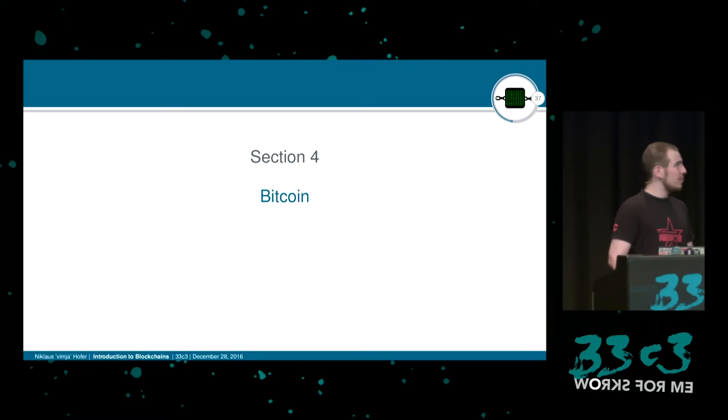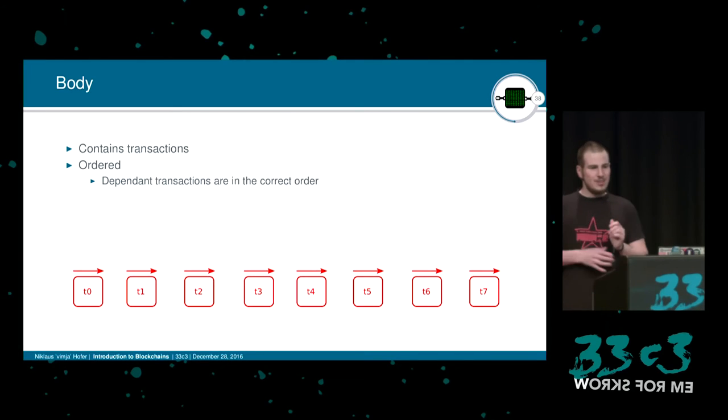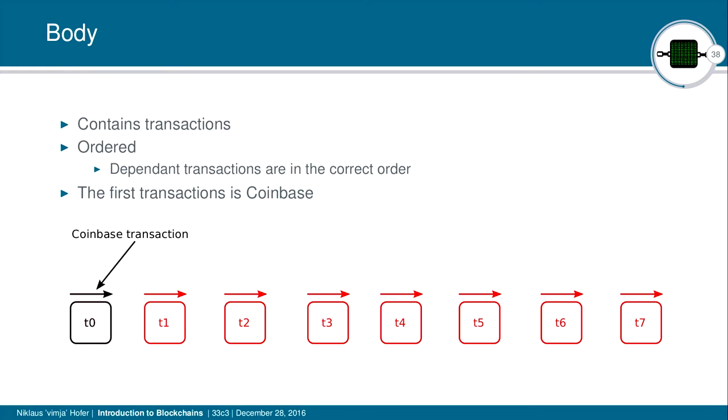We've talked a lot about the generic concept of blockchain — now let's look at how Bitcoin implements it. In computer science we define headers and bodies: the body contains the actual content, the header contains metadata. For Bitcoin blocks, the body contains all transactions in an ordered way. The miner has to stick to certain rules for ordering — which transaction depends on which other transaction must be respected even within the same block. The first transaction in the block is the so-called coinbase transaction, with which the miner transfers the reward to themselves.